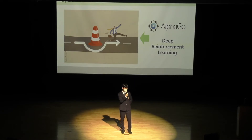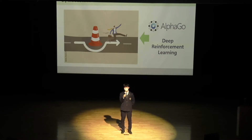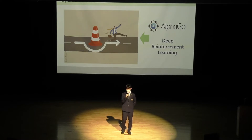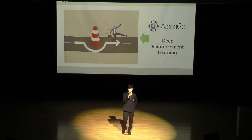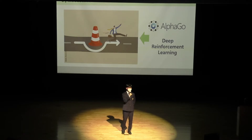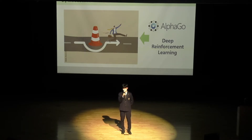So what is deep reinforcement learning? To put it simply, it's a field of deep learning where computers learn how to behave in a certain environment by trial and error. We usually use this algorithm to solve problems where you need to make sequential decisions, and one famous example is AlphaGo.